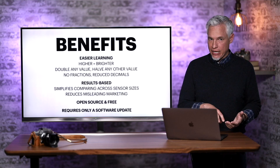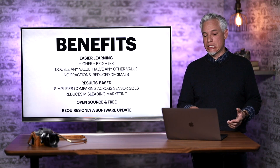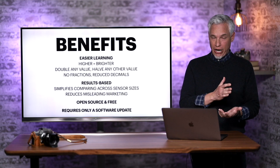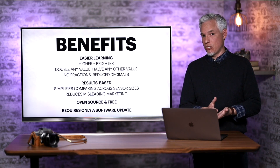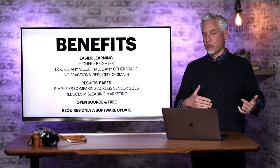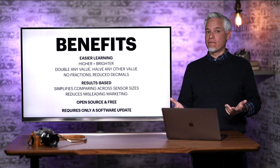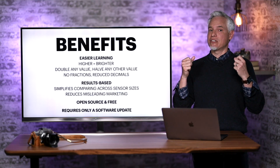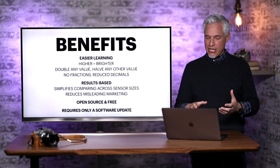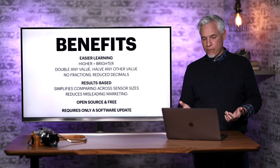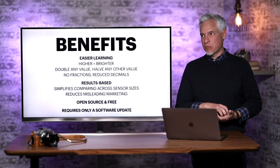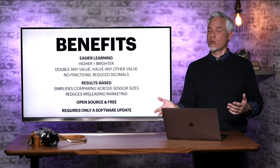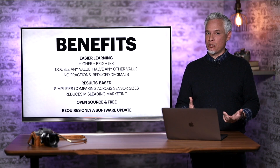I think these changes will benefit everybody learning photography by making it much easier to learn. Double any one value and you increase exposure by one stop — there are absolutely no fractions in the system and a greatly reduced number of decimals. The results are results-based, not based on physical measurements like focal length or aperture diameter. They're based on what the lens is actually producing, so you really know what you're getting whether you're dialing in settings or purchasing new equipment. This will also reduce misleading marketing — specifically smartphone manufacturers bragging about a 35mm f1.8 lens and inviting full-frame comparisons when they know full well they cannot possibly produce the same results.